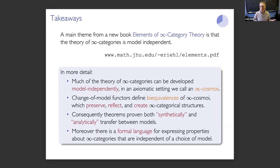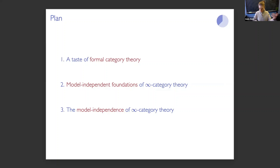There are so-called evil statements that don't respect equivalence of infinity categories, and these will never be model independent. But we're able to build on work of Michael Makkai and introduce a formal language for expressing properties of infinity categories that are independent of a choice of model. So those are the takeaways. What I'm going to do with the rest of this time is give you a taste of what this looks like — illustrating a bit of Australian style formal category theory, explaining how the model-independent foundations work, and discussing model independence.